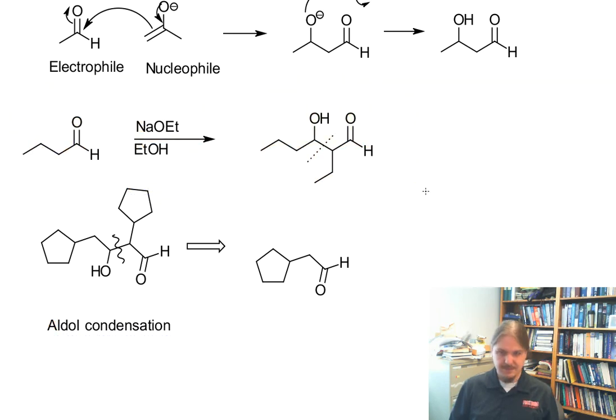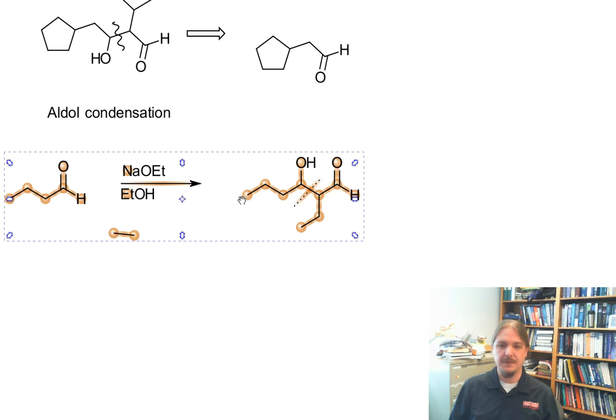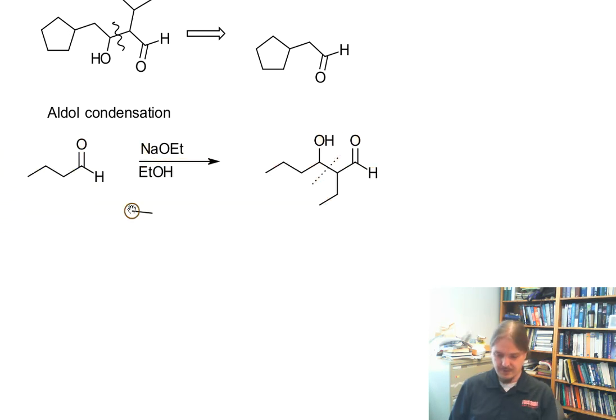Let's take this butanol example. If you were to heat this reaction up in a way where you were able to remove the water that was formed, instead of getting an alcohol in the product, you would get an alkene.